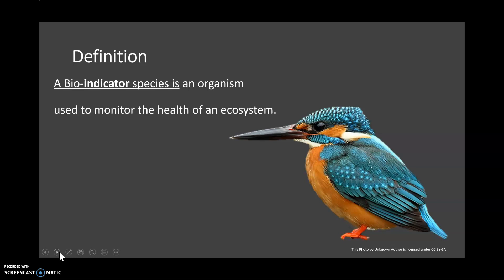One example you might be familiar with is the kingfisher, used to monitor water quality because of the small fish it feeds on — those fish require highly oxygenated, good quality water. So if the water is bad, if there's eutrophication, or too many pollutants or nutrients going into the system, the kingfisher won't be there or will decline. So they can indicate water quality. Can you think of any other indicator species you're familiar with?